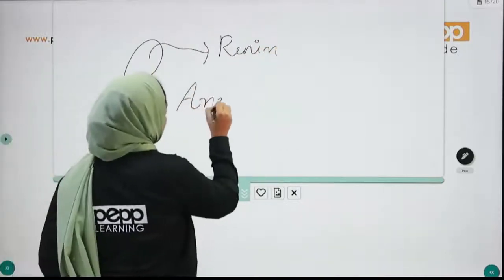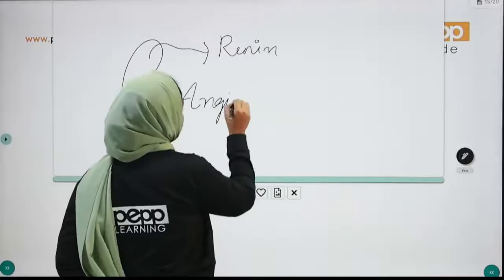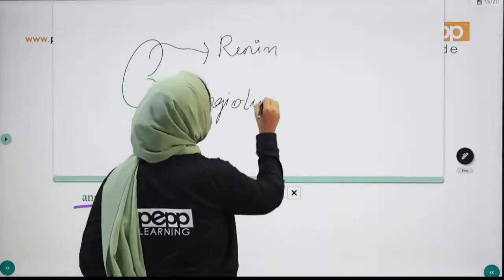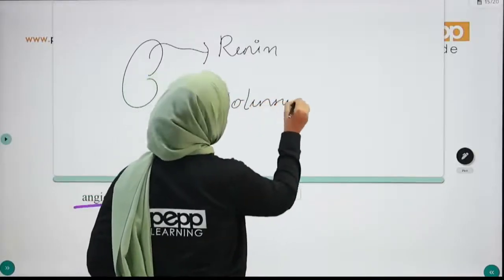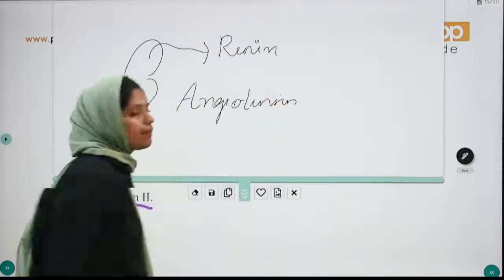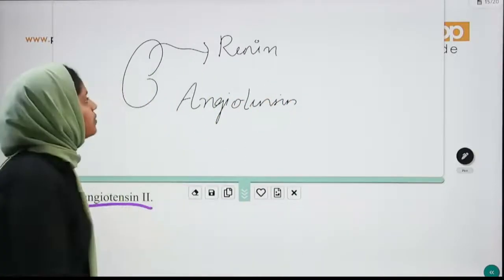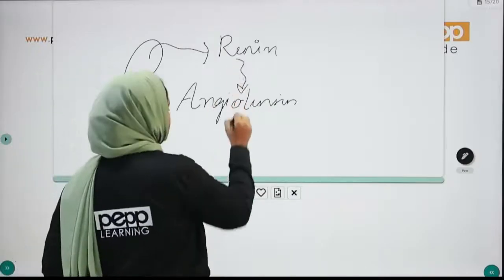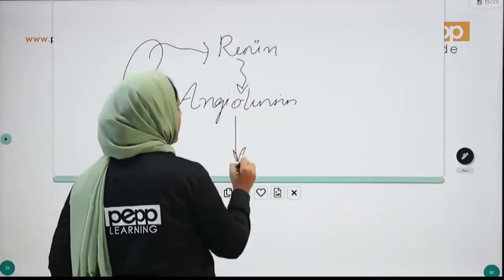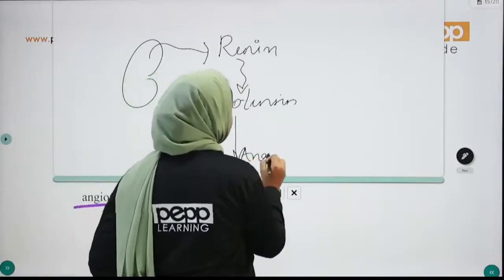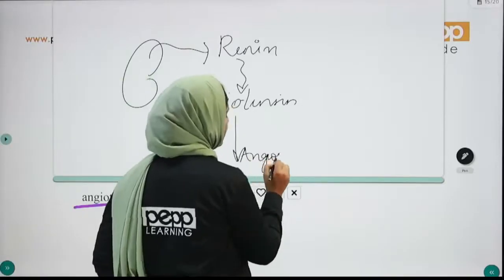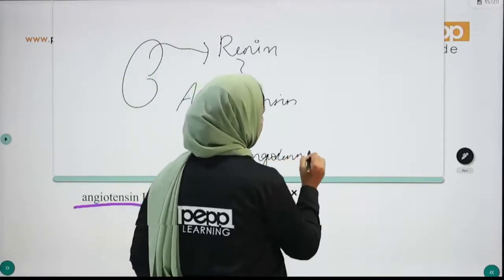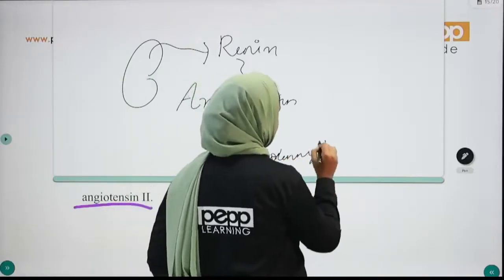Angiotensinogen is a protein in our body. Renin breaks it down to form angiotensin 1, which is then converted further in the blood.